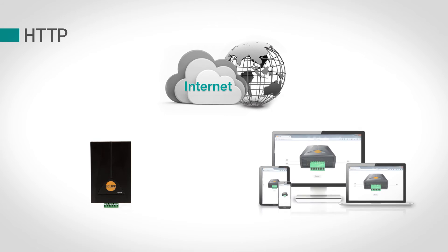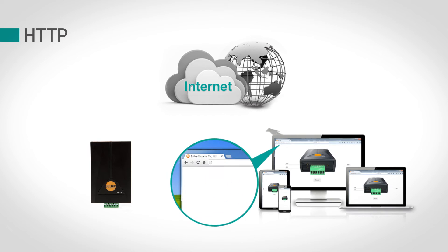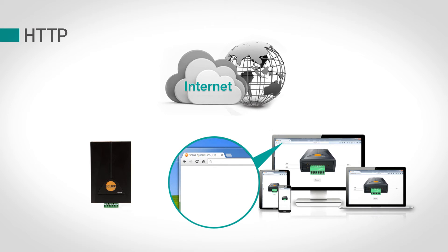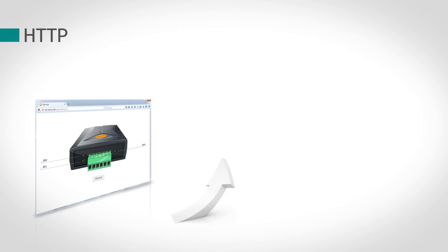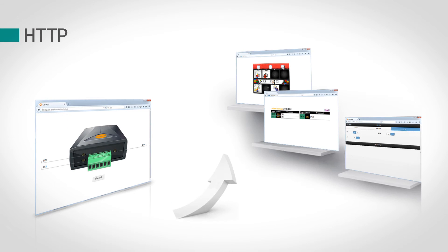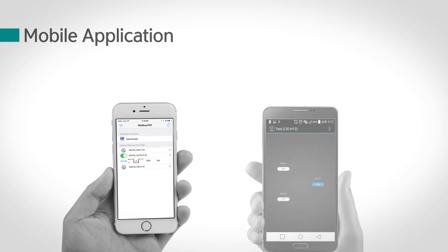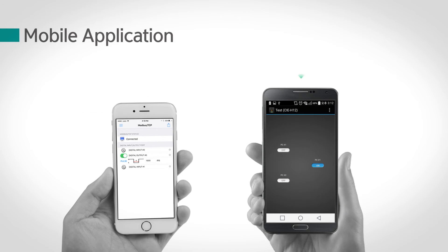Simply enter the product IP in your web browser and access the built-in web server to monitor and control. In this case, you can create your own webpage. Monitoring and controlling is also possible with a mobile application provided by Sollae Systems.